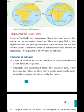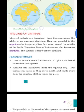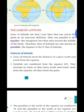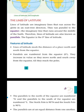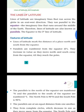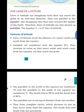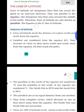जो equator होता है वो zero degree latitude होता है और उसी के parallel अन्य लाइनें खींची होती हैं। Lines of latitude mark the distance of a place north and south from the equator. Equator से ऊपर north में और नीचे south में 90-90 lines होती हैं। Parallels are numbered from the equator (zero degree) and increase in value as they move north and south away from the equator till they reach the poles.